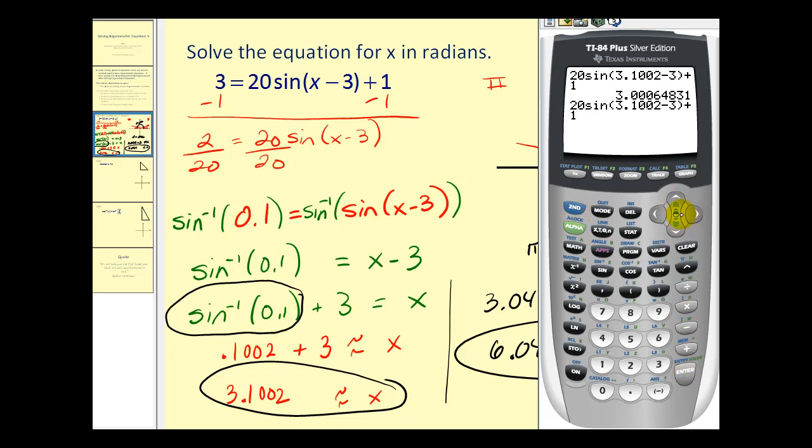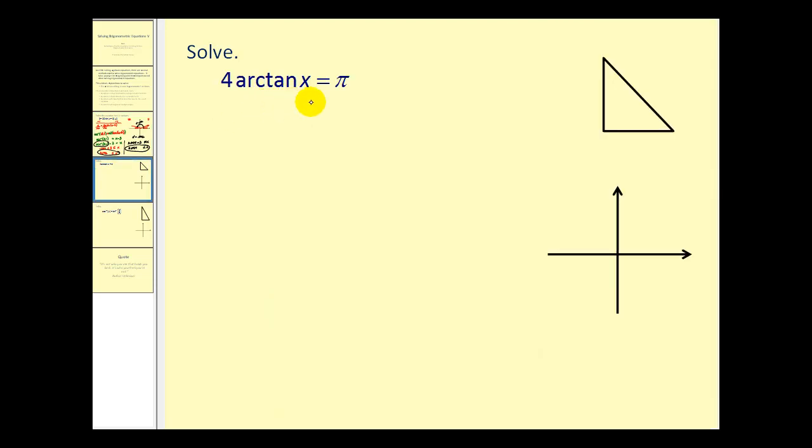And then for the other value of x we'll type in 6.0414, and again very close to the value of 3, so it looks good. Let's go ahead and try another problem.